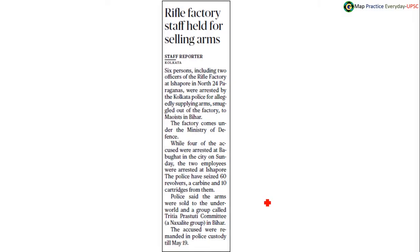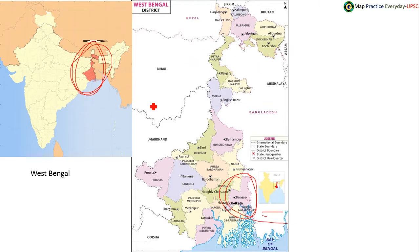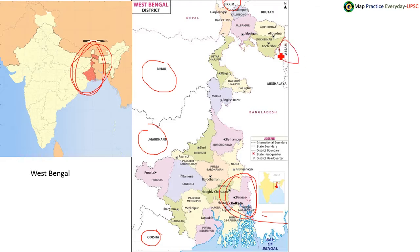Rifle factory staff held for selling arms — this news is coming from North 24 Parganas. North 24 Parganas is located in West Bengal. It has a boundary share with Bangladesh. In general, West Bengal shares its boundary with Orissa, Jharkhand, Bihar, Sikkim, and Assam in the east. International boundaries include Nepal, Bhutan, and Bangladesh — these are the three nations West Bengal shares its international boundary with.